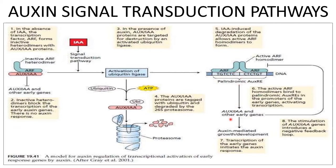The active ARF homodimer binds to the palindromic auxin response element (AuxRE) in the promoter of early genes, activating transcription. The transcription of early genes initiates auxin response. Then, auxin-mediated growth and development — the stimulation of AUX/IAA gene expression — introduces a negative feedback loop.